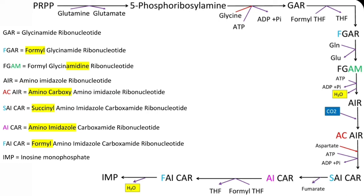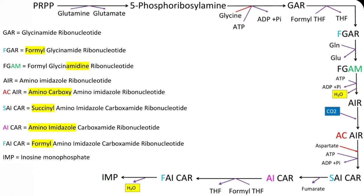In the next reaction, AICAR is converted to FAICAR. F stands for formyl group. This formyl group is transferred from formyl tetrahydrofolate. This reaction is also catalyzed by Formyl Transferase or Transformylase. In the following reaction, FAICAR is converted to Inosine Monophosphate (IMP). This is the tenth reaction and is a cyclization reaction where ring closure takes place, so the enzyme is Cyclohydrolase.